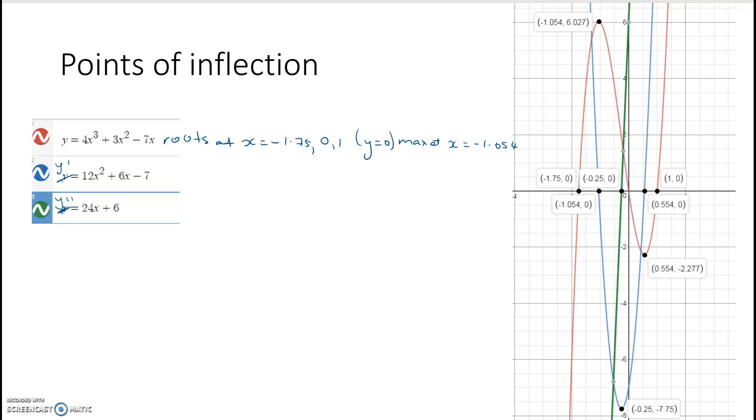And it has a minimum at x equals negative 0.25. Now, let's look at the derivative, the blue curve, which has turned into, obviously, a quadratic. It has roots at x equals negative 1.054, and 0.554.